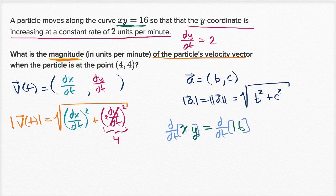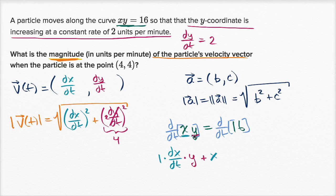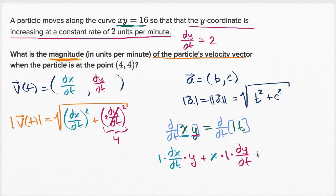This gives us: the derivative of x with respect to x is one, times the derivative of x with respect to t — because we're taking the derivative with respect to t, not x — times the second function y, plus the first function x times the derivative of y with respect to t. The derivative of y with respect to y is one, and the derivative of y with respect to t is dy/dt. That equals zero, since the derivative of a constant is zero.